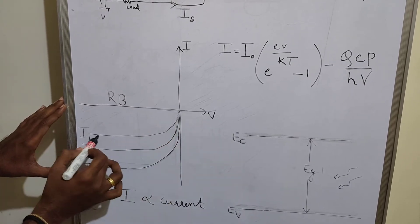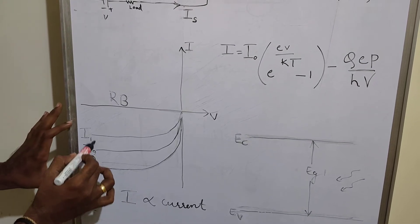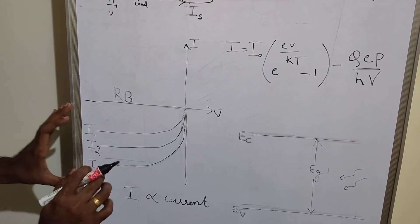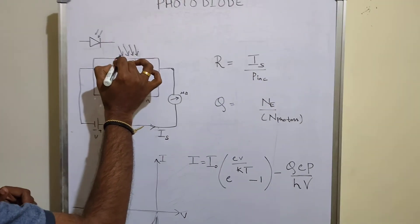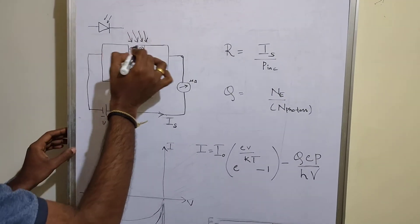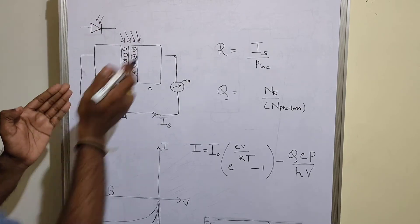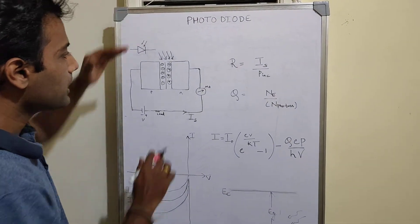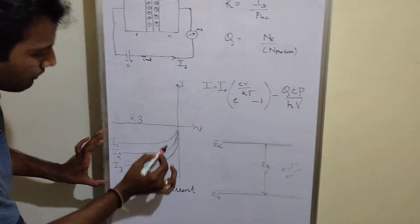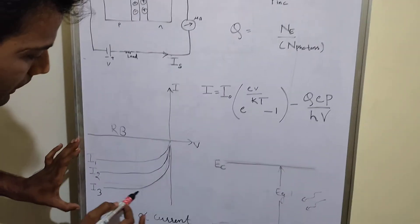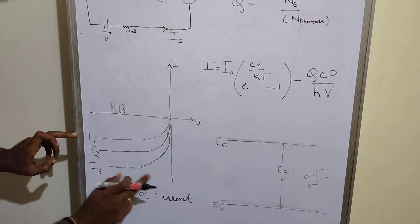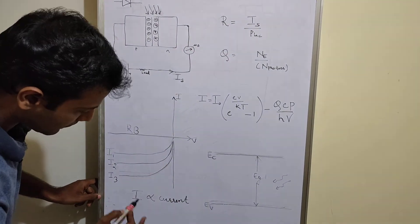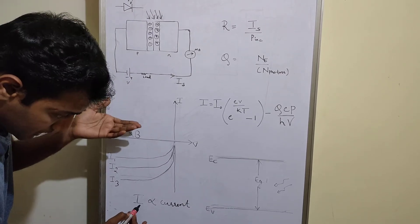In the IV characteristics, with respect to voltage, there are curves for different intensities of light — I1, I2, I3 representing different intensity levels. If I increase the number of photons — say from four to eight — the current will increase. As per the graph, when the number of photons increases, the current increases. So we conclude: intensity I is directly proportional to current. When intensity increases, current increases, and vice versa.